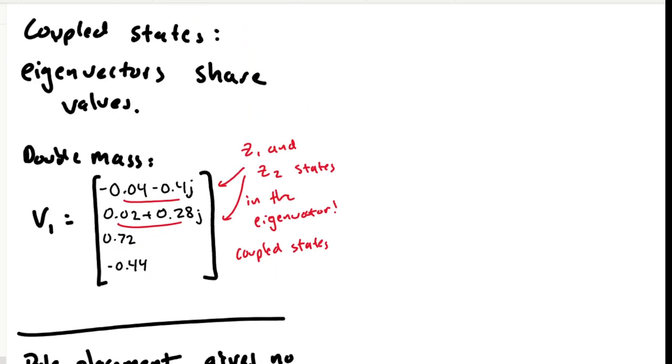With a system with coupled states, the eigenvectors will show non-zero values in all of the coupled states. So for example, for the double mass system that we have here, we can see non-zero values for the Z1 and Z2 states in the system. This means that an initial condition that excites Z1 will also cause movement in Z2, which corresponds physically to the springs and the dampers pulling back and forth between the masses.